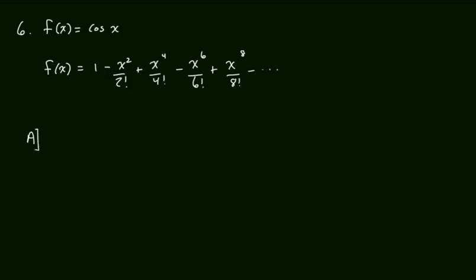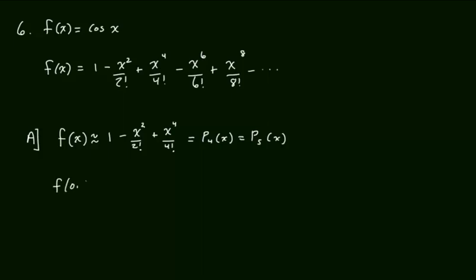In part A, we construct our polynomial. The zeroth order term is 1, the first order contributes nothing, the second order is −x² over 2!, the third order is zero, the fourth order is x⁴ over 4!, and the fifth order is also zero. So this is a fourth-order polynomial, but it is also a fifth-order polynomial. We say f(0.5), which is cos(0.5), is approximately the fifth-order polynomial at 0.5: 1 minus 0.5² over 2! plus 0.5⁴ over 4!.